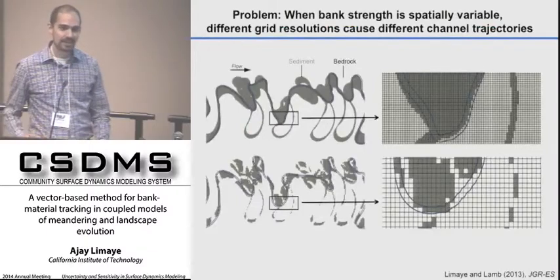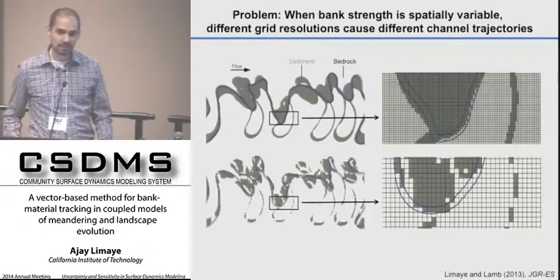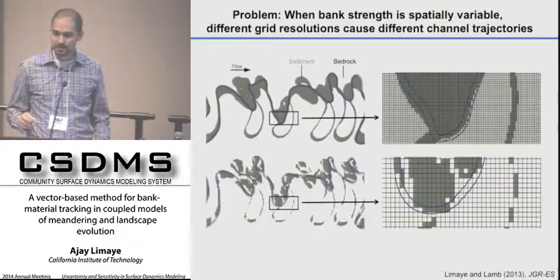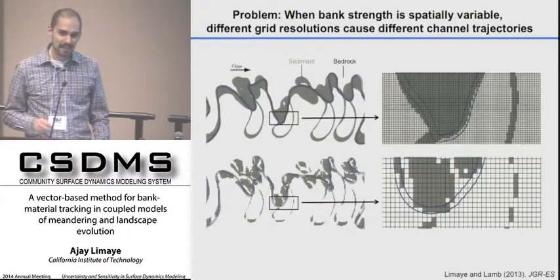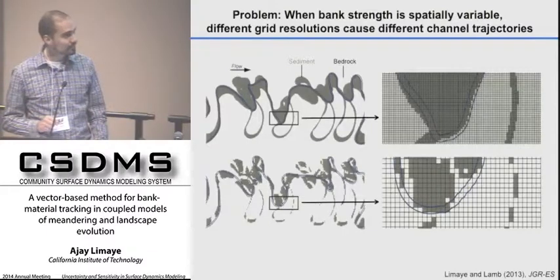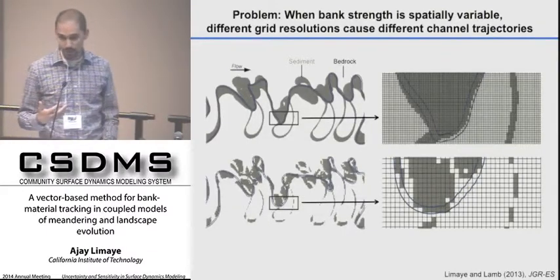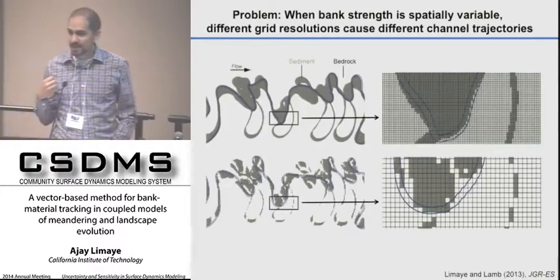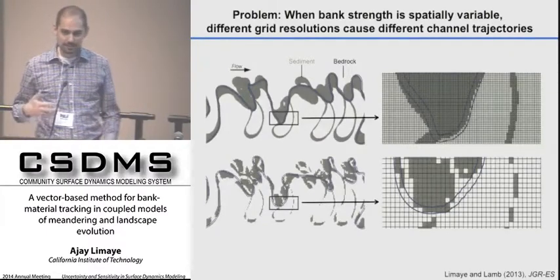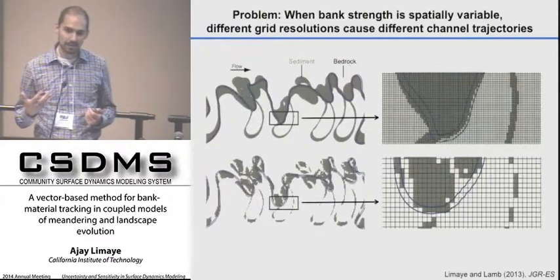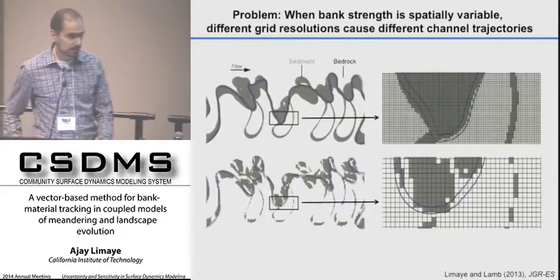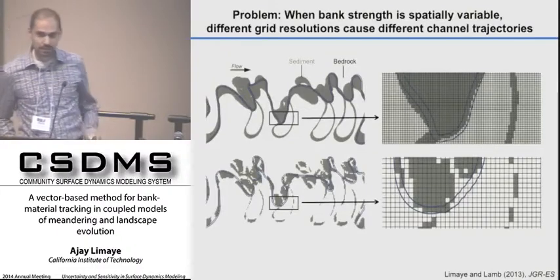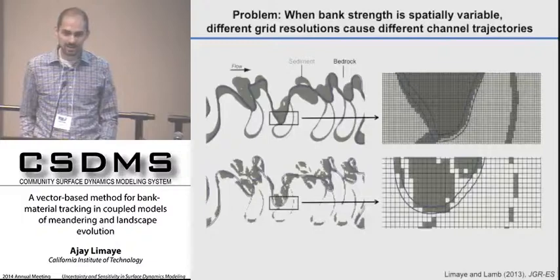This is a detail that has cascading consequences in time-evolving scenarios. Two simulations tracking bank strength in a landscape with the same initial channel geometry can produce very different results depending on grid resolution. As the channel erodes bedrock and deposits sediment behind it, different grid resolutions impart a different memory of bank strength into the landscape, which then feeds back to cause completely different trajectories for the channel.